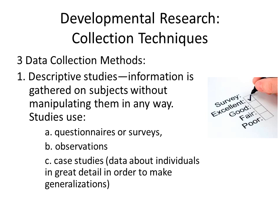There are three. The first is what we call descriptive studies — information is gathered on subjects without manipulating them in any way. We're not manipulating the subjects. These kinds of studies use questionnaires, surveys, observation, and what we call case study data: information about individuals in great detail in order to make generalizations.